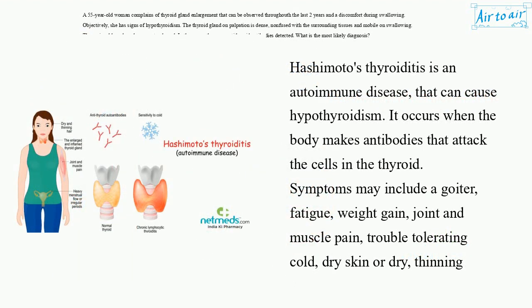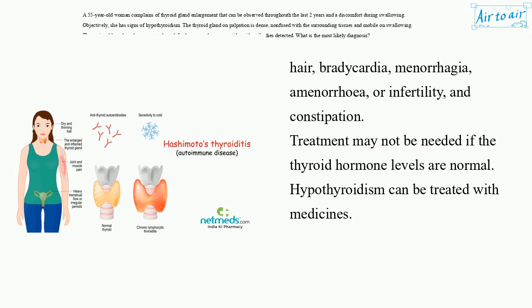Hashimoto's thyroiditis is an autoimmune disease that can cause hypothyroidism. It occurs when the body makes antibodies that attack the cells in the thyroid. Symptoms may include a goiter, fatigue, weight gain, joint and muscle pain, trouble tolerating cold, dry skin or dry thinning hair, bradycardia, menorrhagia, amenorrhea, or infertility, and constipation. Treatment may not be needed. If the thyroid hormone levels are normal, hypothyroidism can be treated with medicines.